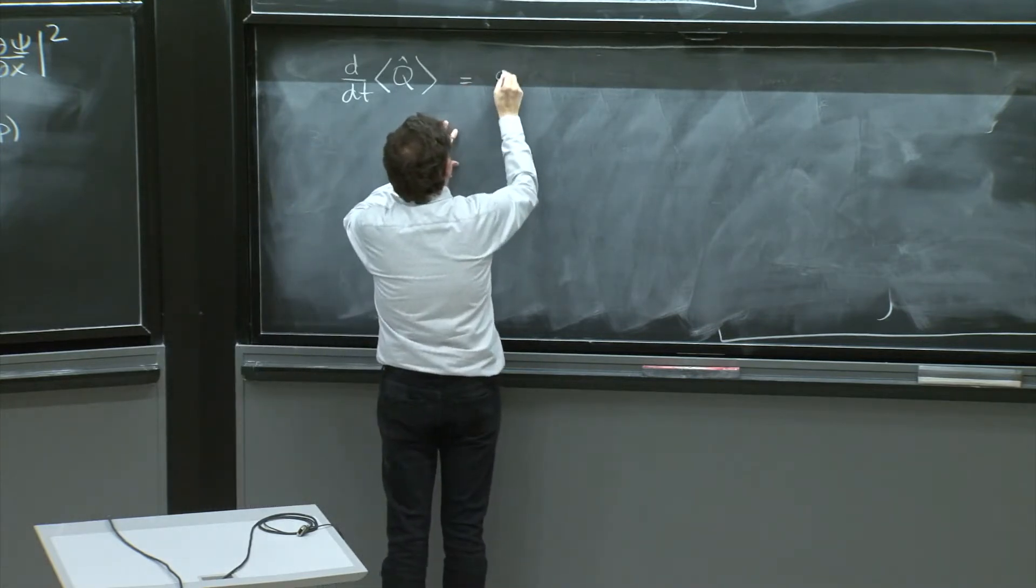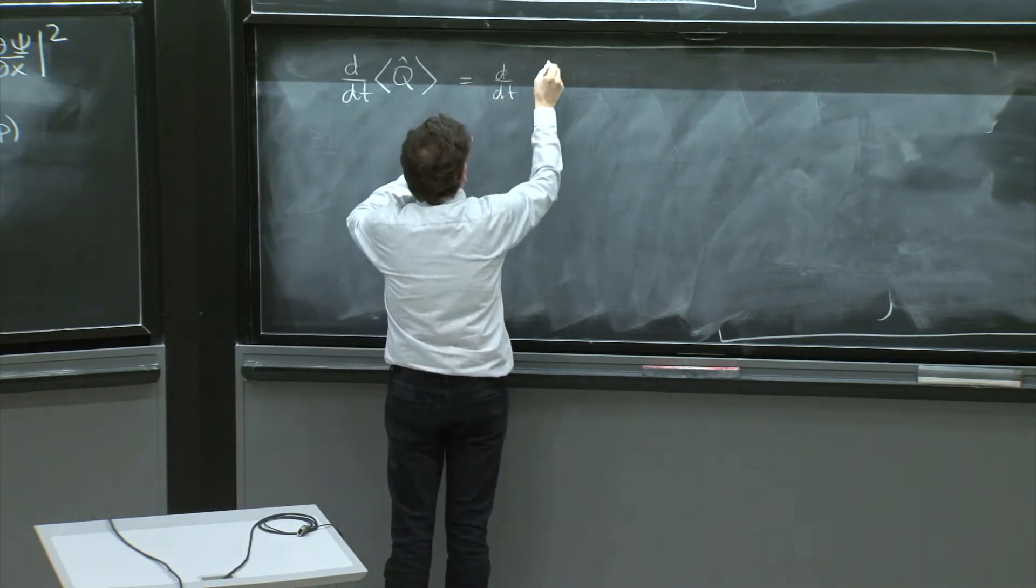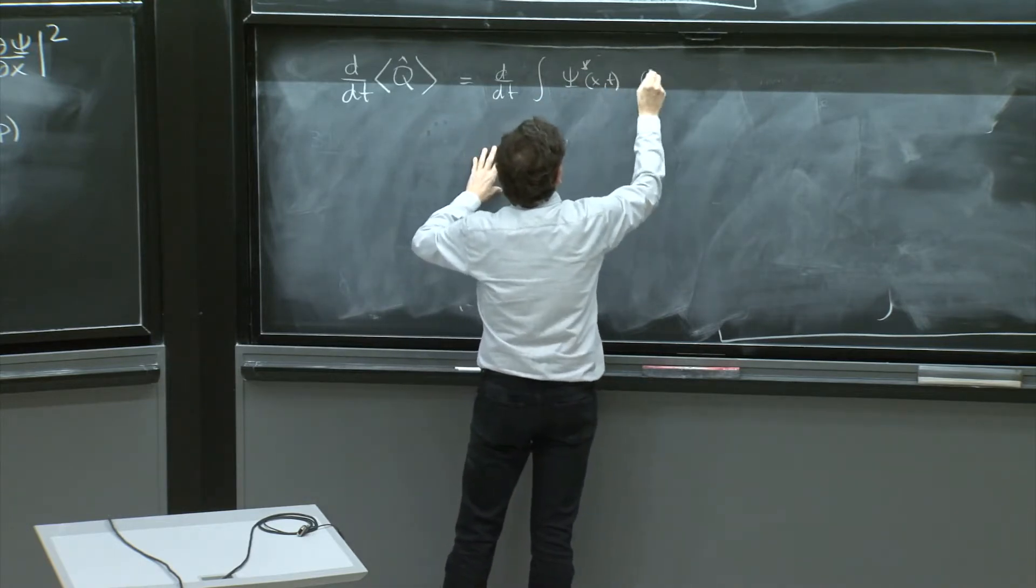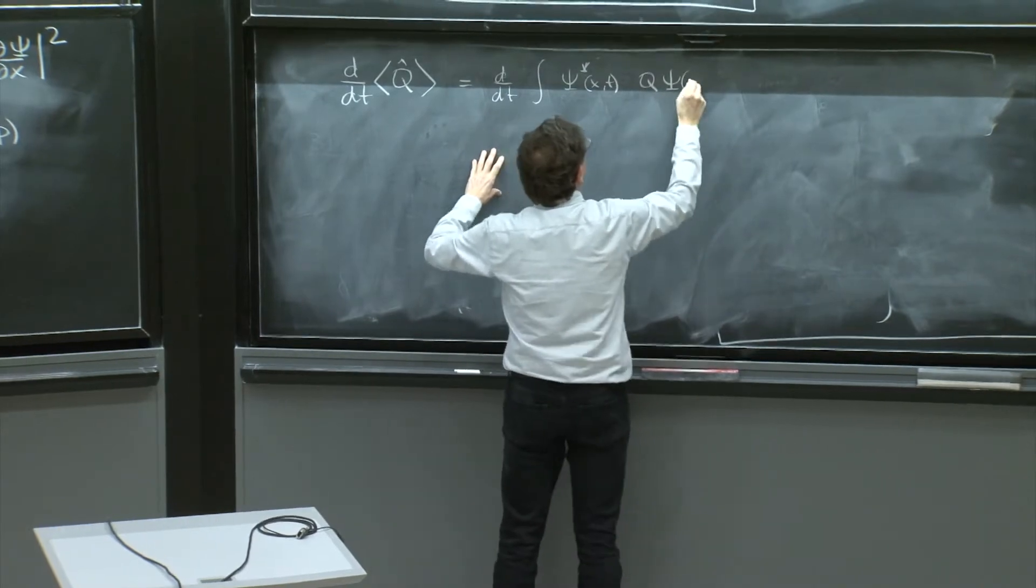Now, this would be d dt of integral psi star of x and t, q psi of x and t.